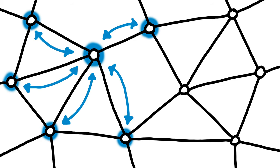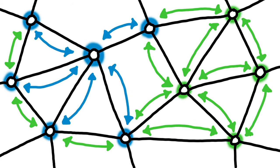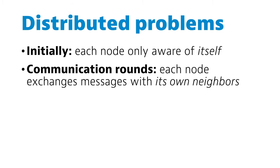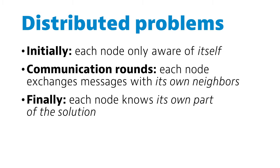Nobody knows the whole graph. Here I know that I am a node with five neighbors — that's it. I can exchange messages with my neighbors to learn more. And of course, all other nodes can do the same; everyone can talk to their own neighbors to learn more. But we don't want to waste too much time doing communication. Each communication step takes some time, and we want to minimize the number of communication rounds. So after some ideally small number of communication rounds, we want to stop. And when we stop, each node has to figure out its own part of the solution.